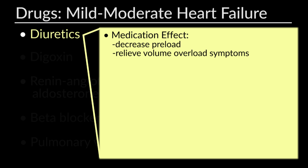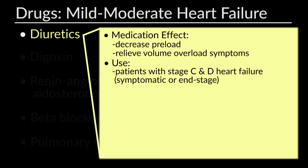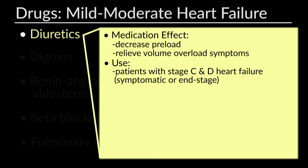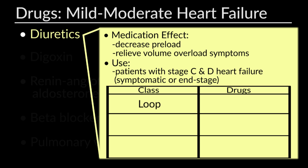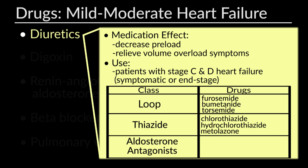Diuretics decrease preload by promoting natriuresis and relieve symptoms of volume overload — pulmonary or peripheral edema. They are generally used in children with stage C and D heart failure. There are multiple classes: loop diuretics inhibit sodium and chloride reabsorption in the thick ascending loop of Henle — including furosemide, bumetanide, and torsemide. Thiazide diuretics inhibit reabsorption in the convoluted tubules — including chlorothiazide, hydrochlorothiazide, and metolazone. Aldosterone antagonists decrease sodium reabsorption and potassium excretion in the collecting ducts, including spironolactone and eplerenone.